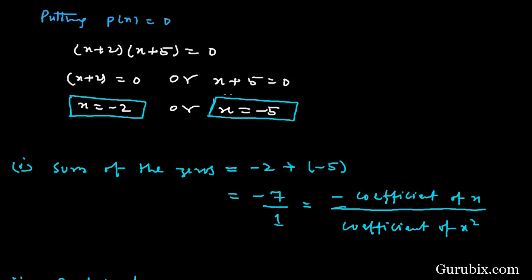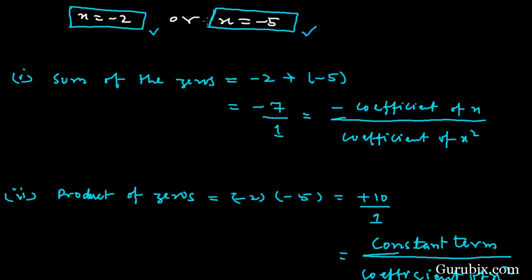This means x + 2 = 0 or x + 5 = 0, which gives x = −2 and x = −5. These two values, x = −2 and x = −5, are the zeros of the given polynomial. This means at x = −2 and x = −5, the graph of this quadratic polynomial will intersect the x-axis.